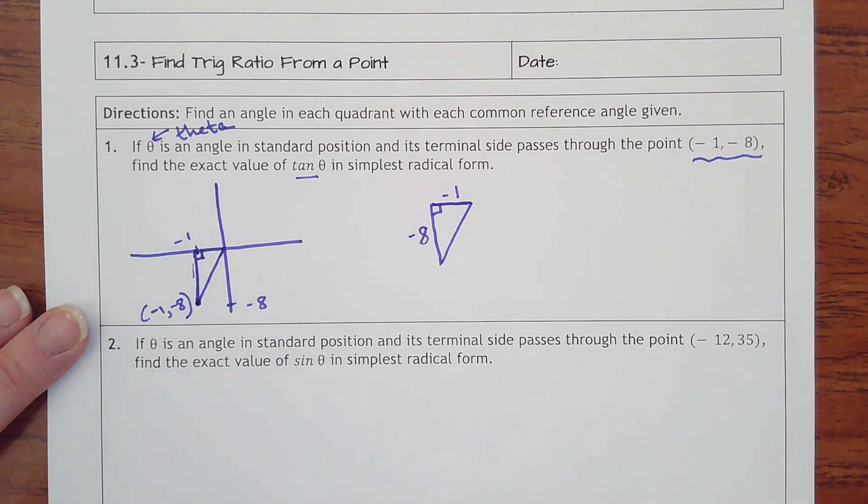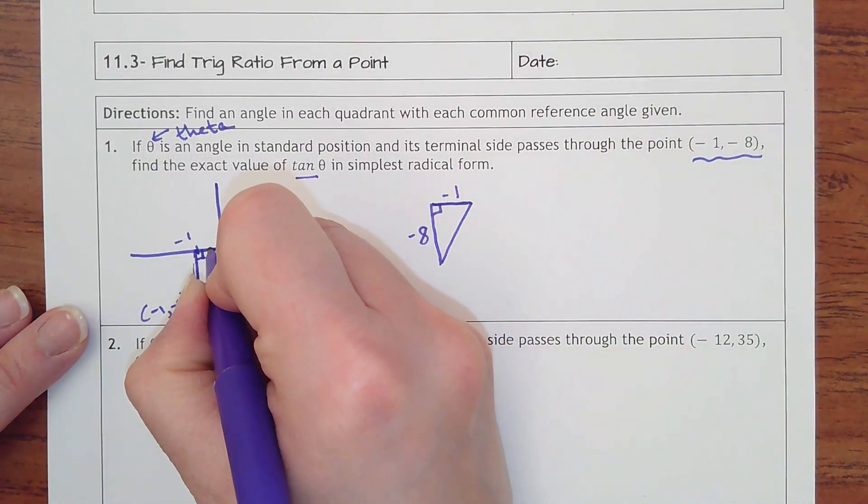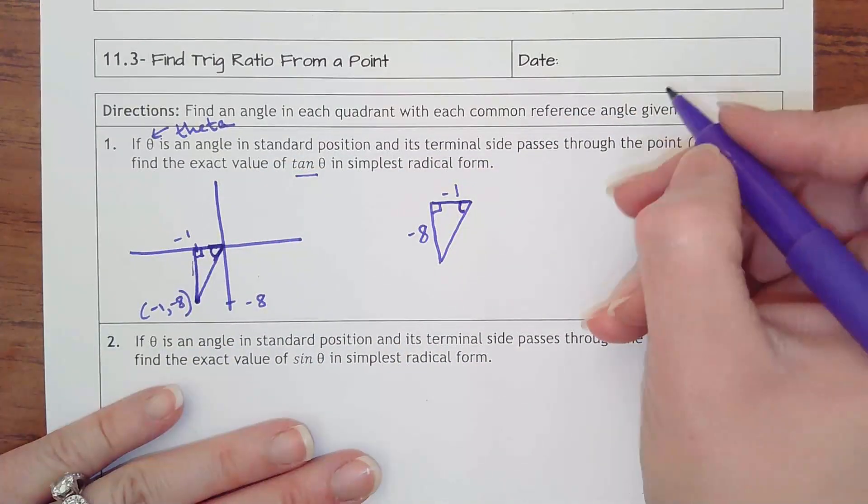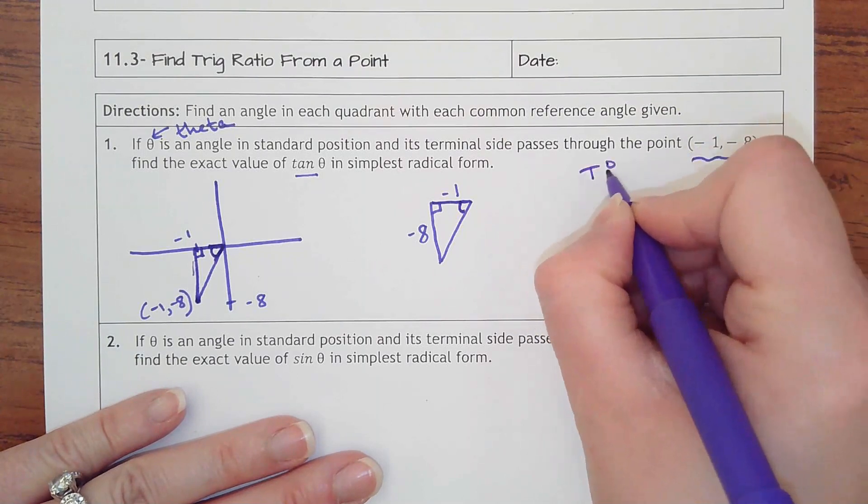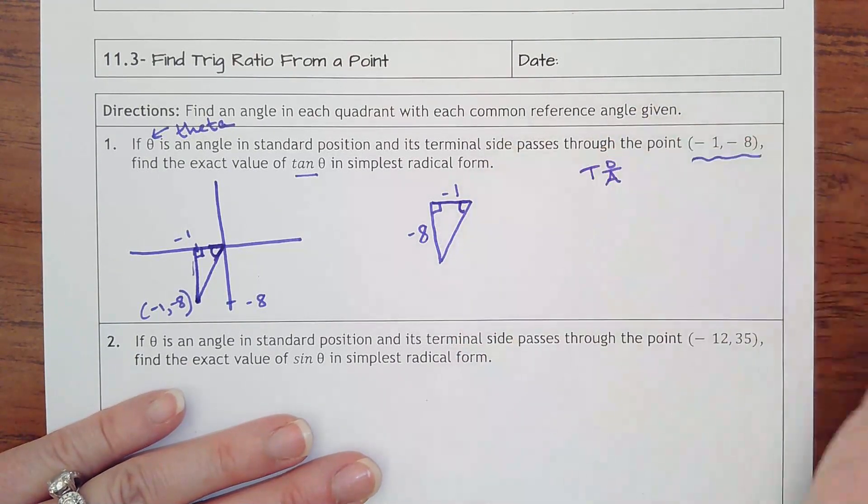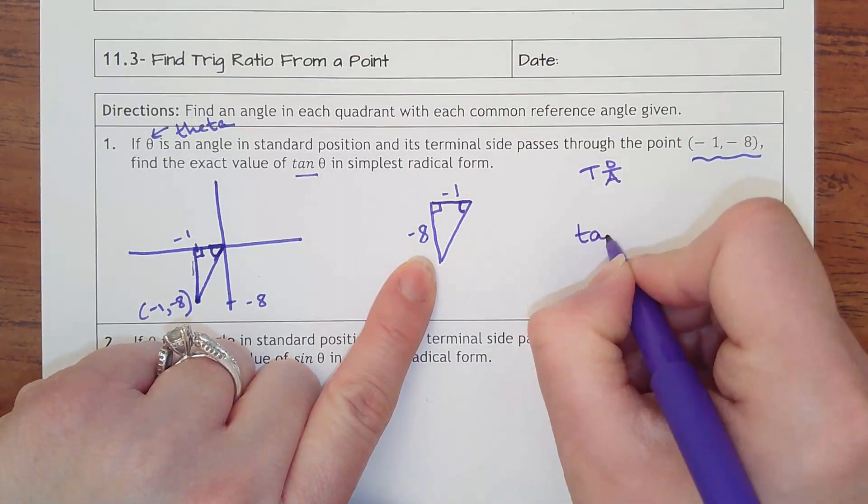And then we're doing tangent from theta. Theta is the angle inside the triangle formed with the x-axis, so right here. Remember SOH CAH TOA is opposite over adjacent, so I'm gonna have opposite over adjacent. I don't need to do Pythagorean theorem. I have exactly what I need. So tangent of theta...